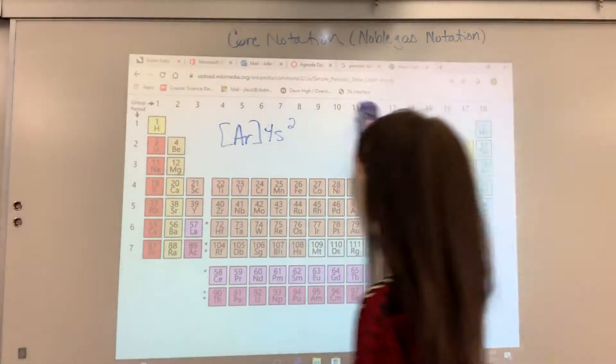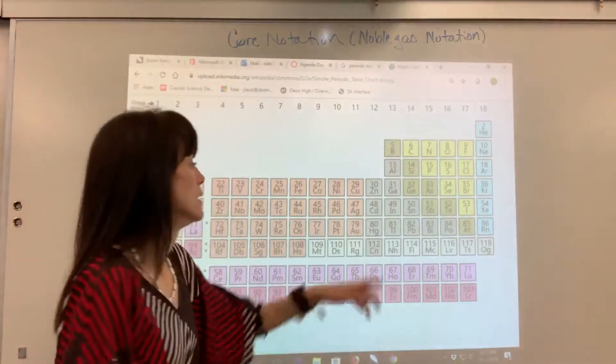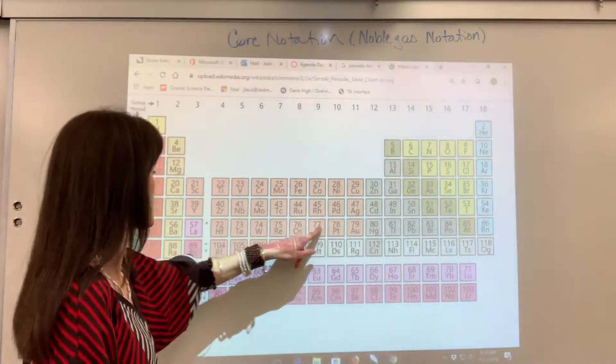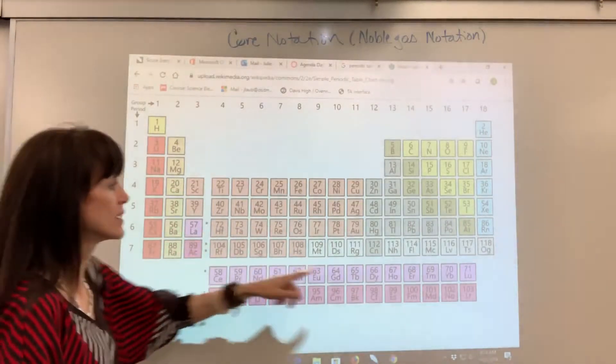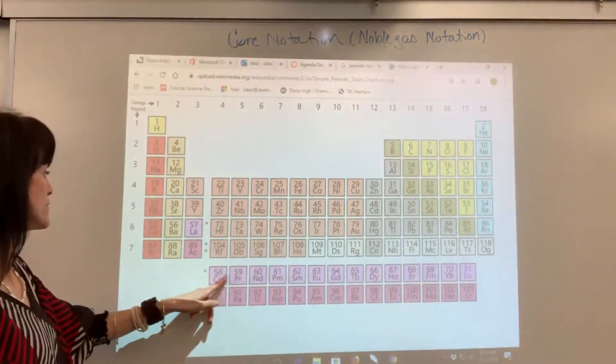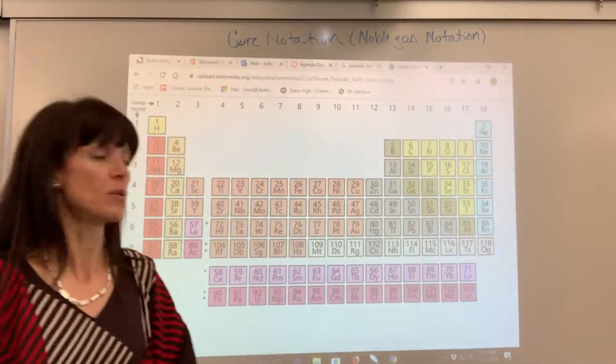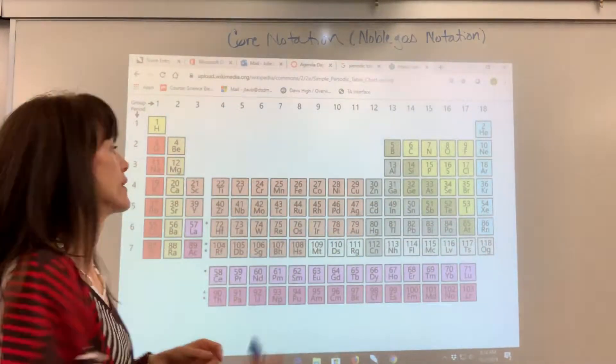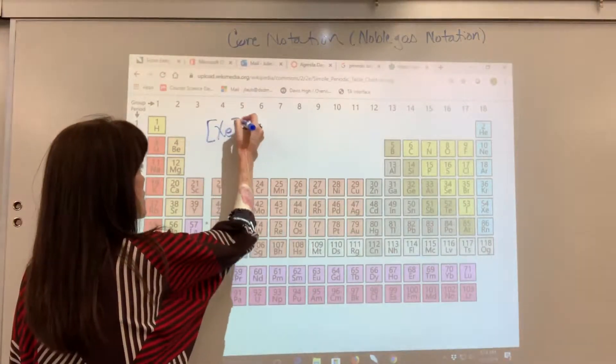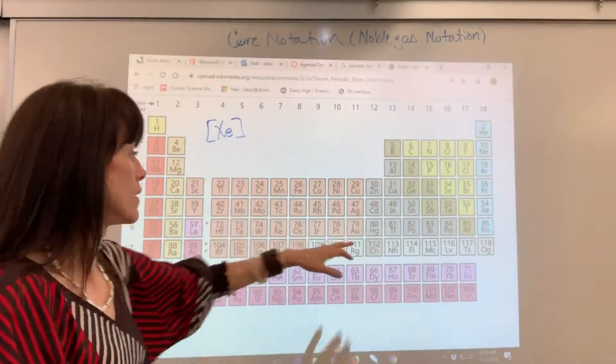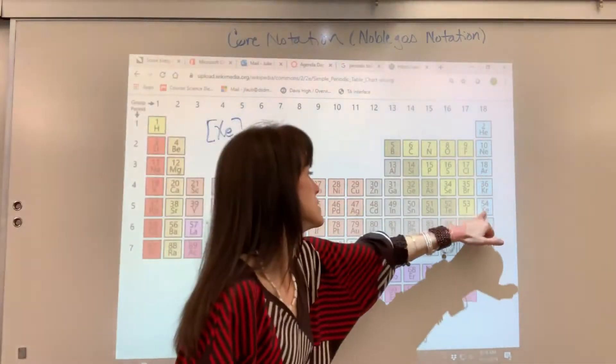Let's take mercury. Okay, so we are going to backtrack. I go 80, 79, 72. Come down here, 71, 58, 57, 56. Wow. The last noble gas is xenon. So, we're going to put xenon in brackets and now we're going to do the electron configuration from xenon all the way to mercury. So, there's xenon.